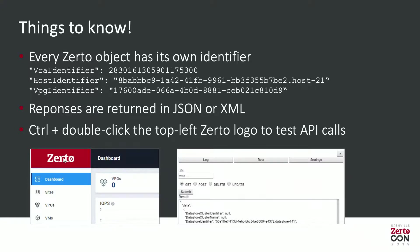Everything in Zerto has its own identifier — every object, whether it's a datastore, a VM, a VPG, you name it — and you have to use those to communicate with the API. The reason we have our own identifiers is because we support multiple platforms, so we can't use VMware's identifier — it can change and it's not consistent across all our APIs. Using Zerto's own identifiers makes it consistent and easier to code against.